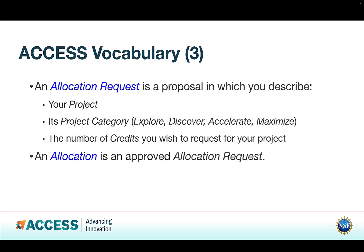An allocation request is a proposal in which you describe your project, its project category — one of the four: Explore, Discover, Accelerate, or Maximize — and the number of credits you wish to request. An allocation is an allocation request that has been approved. Once you have an allocation, you have credits that you can spend for your project.